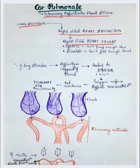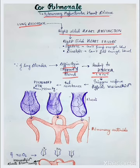It can be systolic and diastolic — in systolic the heart can't pump enough blood, and in diastolic it can't fill enough blood. Because of the lung disorder, there is difficulty in oxygenation of blood, leading to hypoxia — decreased oxygen — which triggers hypoxic vasoconstriction, jiske wajah se increased resistance ho jaygi.